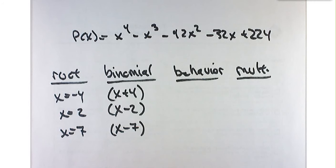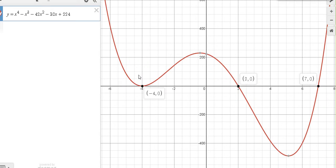Now let's look at the behavior of the function at these roots. Coming back to our graph, what kind of behavior, bounce, wiggle, or straight through, do we have at negative 4? A bounce.